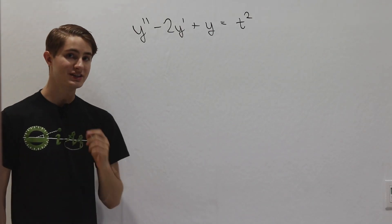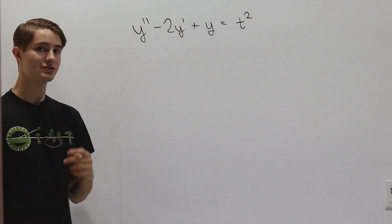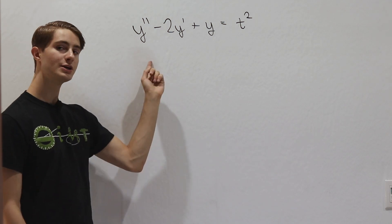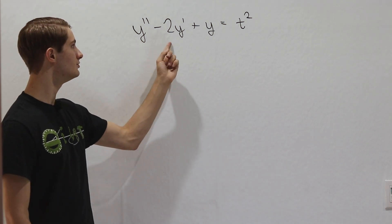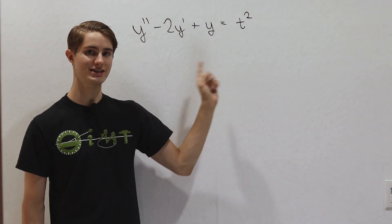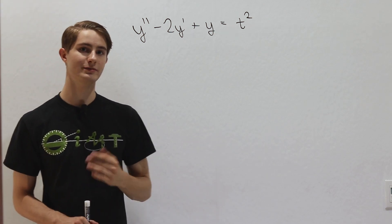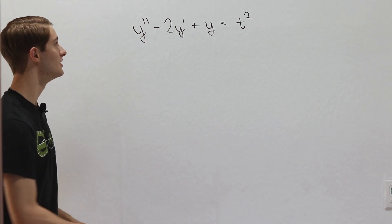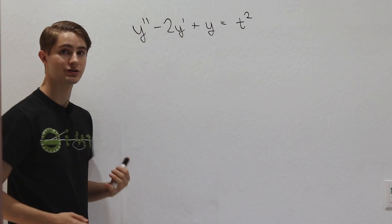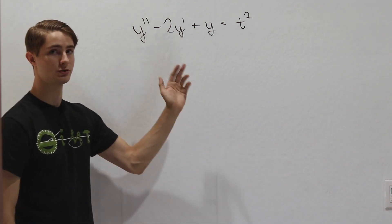We are going to talk about the undetermined coefficients method for solving differential equations using this example: y double prime minus 2y prime plus y equals t squared.